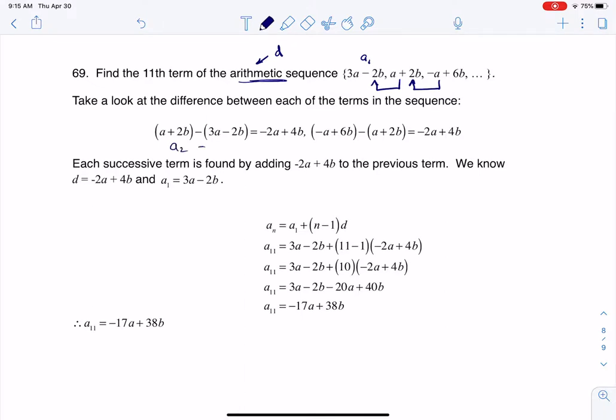I'm doing a sub 2 minus a sub 1. This is a sub 3 minus a sub 2, right? And you see that that difference is constant, so my d value here is negative 2a plus 4b.